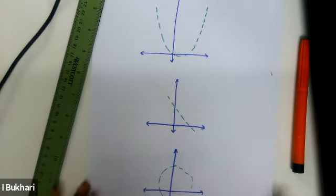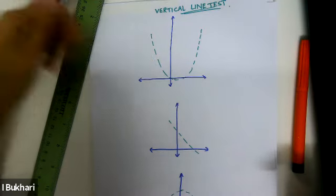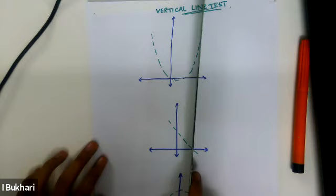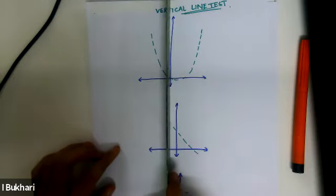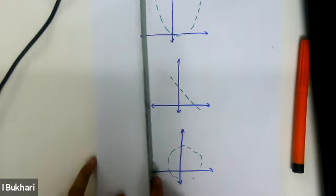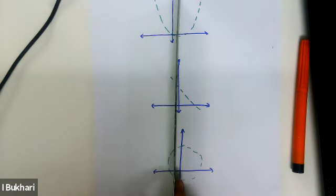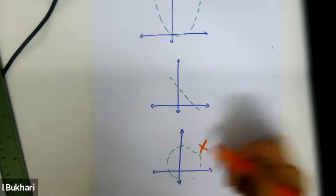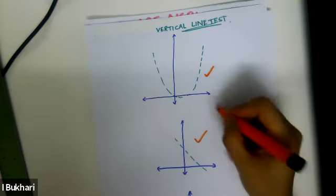Looking at more graphs: a quadratic function — the vertical line test shows it only ever touches the line at one point. Another graph also only touches at one point. But for a circle, it touches at one point on the edges, then two points through the middle. That's not okay, so the circle is not a function. The other two graphs are functions.